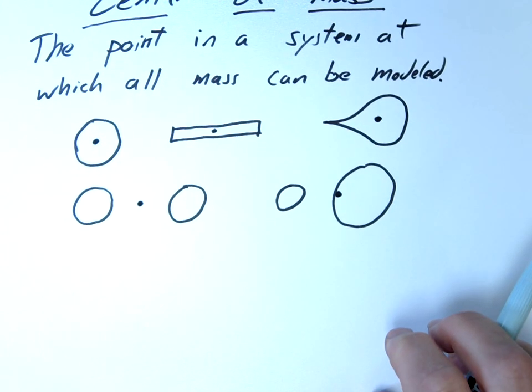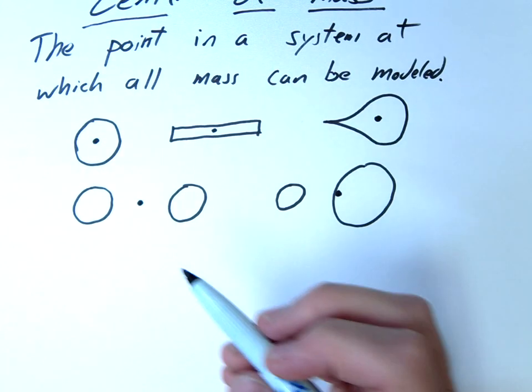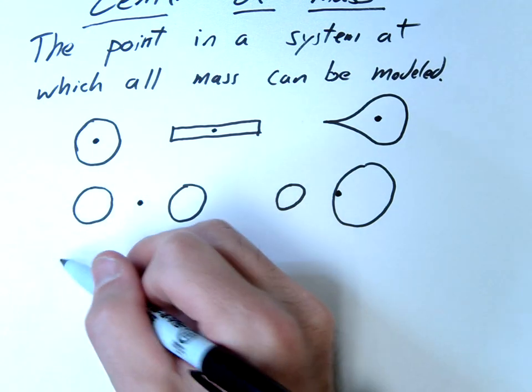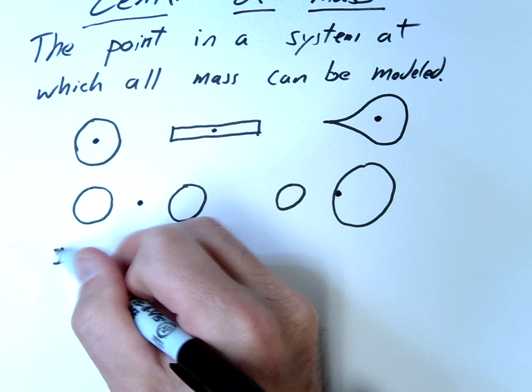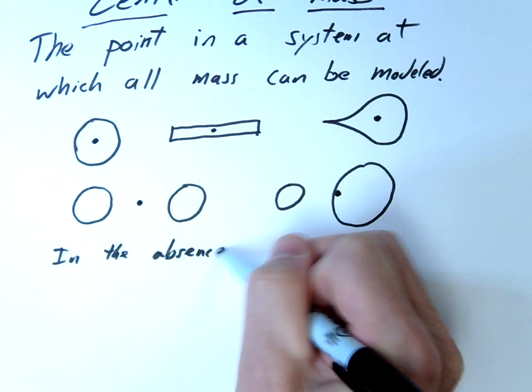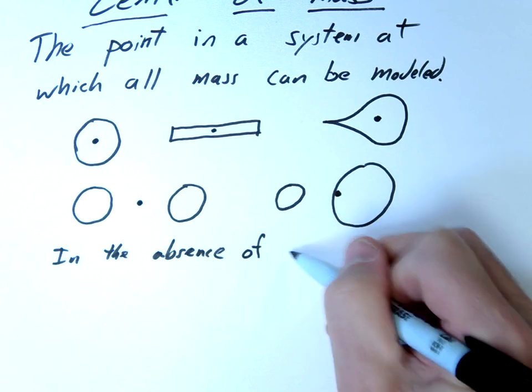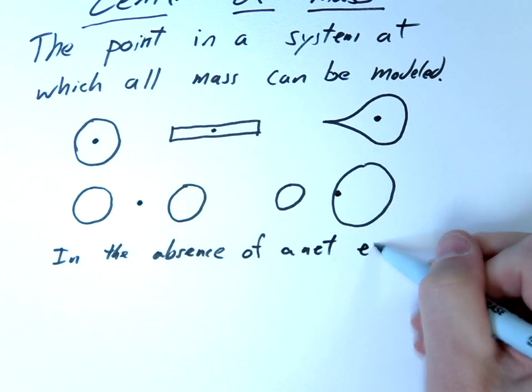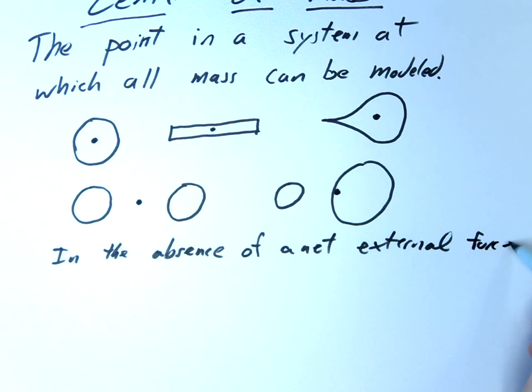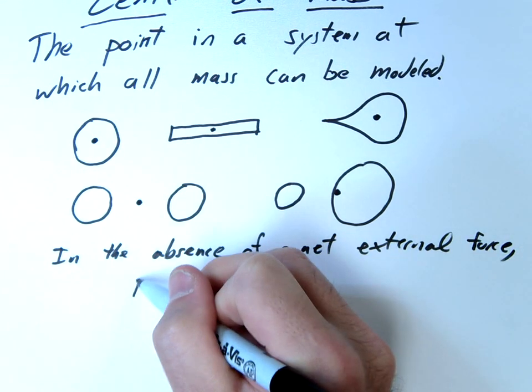So where this is going to become important in this unit is with conservation of momentum. So remember, conservation of momentum, we say in the absence of an external force, P initial equals P final.